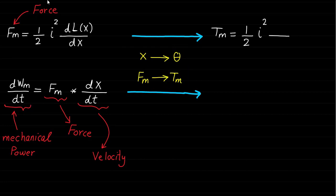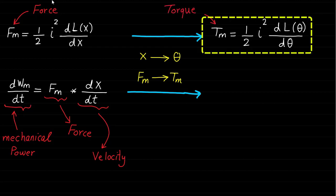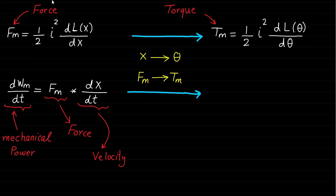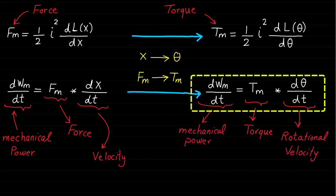As you can see, the torque expression is equal to 1/2 * I² * dL(θ)/dθ. The mechanical power is equal to the torque times the angular velocity dθ/dt.